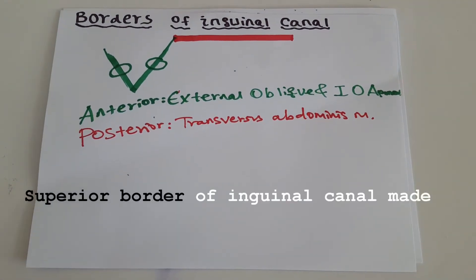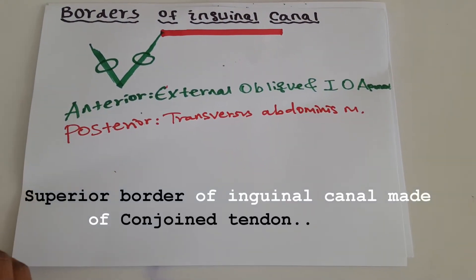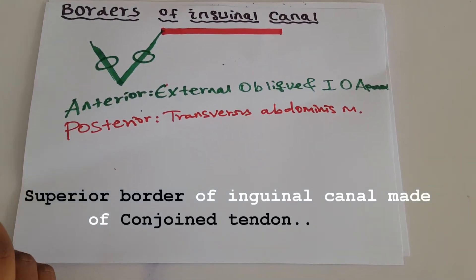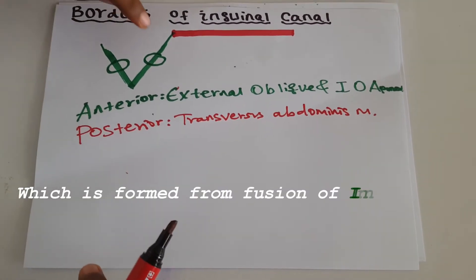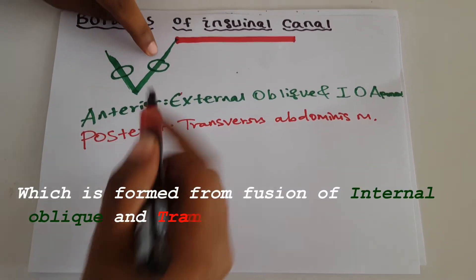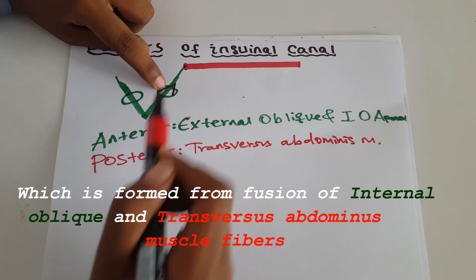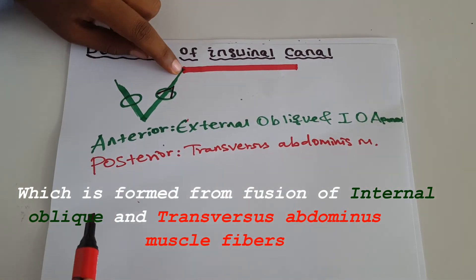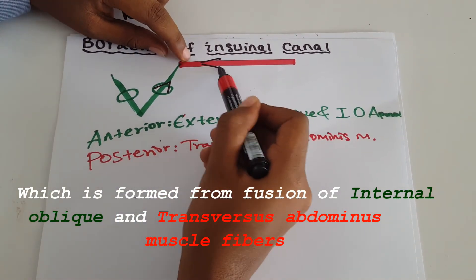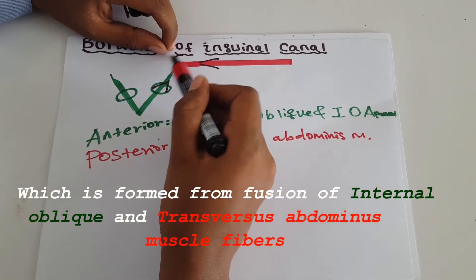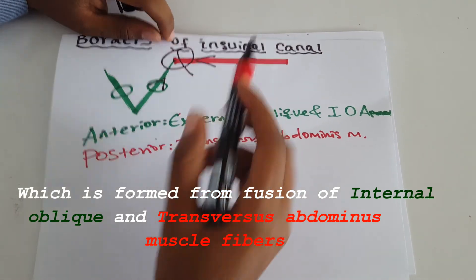The superior border of the inguinal canal is made of the conjoint tendon, which is formed by the fusion of the internal oblique muscle and the transversal abdominal muscle.